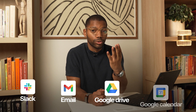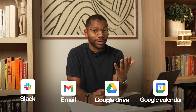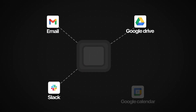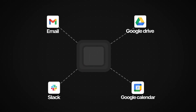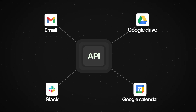What if I wanted my AI to connect to more than one tool — Slack, email, Google Drive, Google Calendar, and so on? I would have to create a one-on-one connection with every single tool, build an API, and maintain it whenever anything changes in the technology.